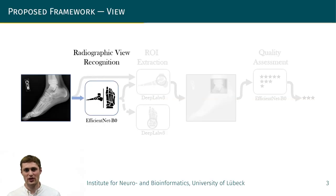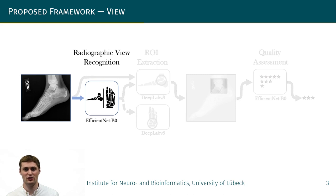For automated quality assessment of ankle radiographs, we propose the following framework. The first step consists of recognizing the radiographic view. For ankle radiographs, this means classification into AP or lateral, for which we used an EfficientNet B0. By dividing the quality assessment task into a view-specific task, we facilitate the learning process of our networks.